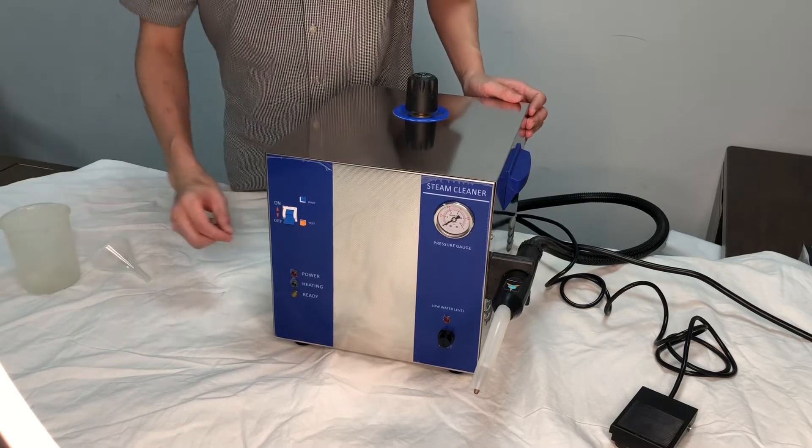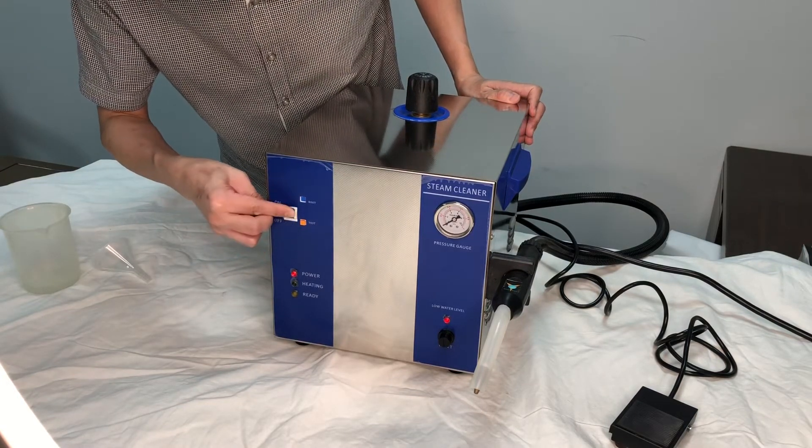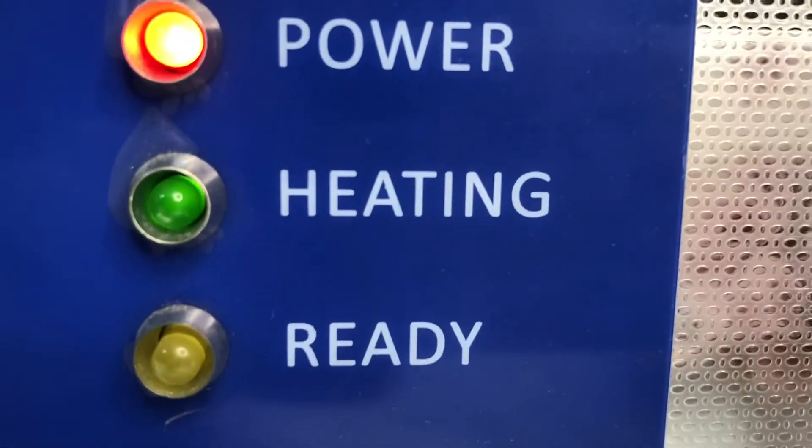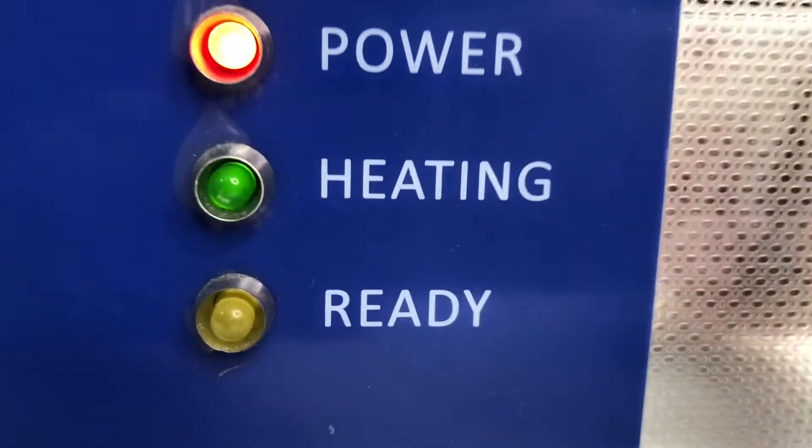The next step is operation. Switch on the machine with this lever. During the heating stage, the red and green lights are on. When the steam is ready, the yellow light will turn on.